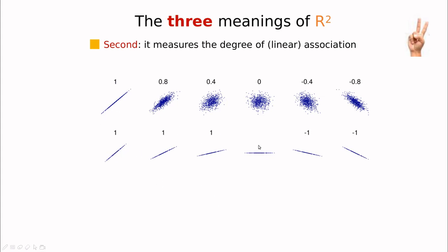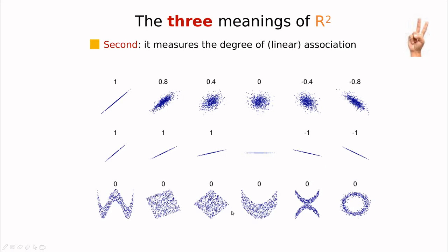So: correlation of 1 is perfect, 0 is no correlation at all, and minus 1 is perfect but inverse correlation. What if we have nonlinear features? In this case the correlation is 0, but that doesn't mean we don't have any connection — the association can actually be pretty strong, like a W shape or a circle. R-squared only measures linear association.